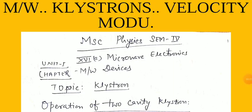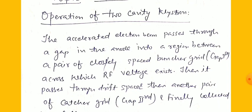Good morning friends, myself Dr. R.C. Chauhan, Associate Professor, Samrat Prithviraj Chauhan Government College. Today we will discuss MSc Physics Semester Fourth, Paper 16A: Microwave Electronics, Unit 1, Chapter: Microwave Devices. The topic for today is the klystron. In the last lecture we discussed what the klystron is and why we need it. From today we will discuss the operation of the two-cavity klystron — first the process, then the quantitative analysis.